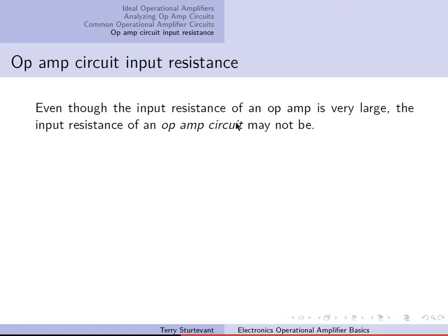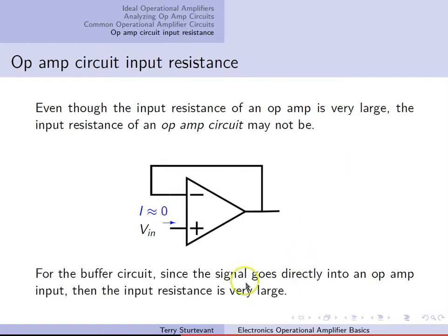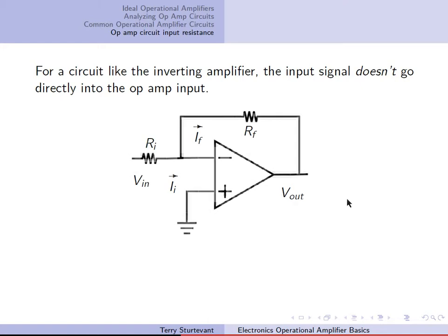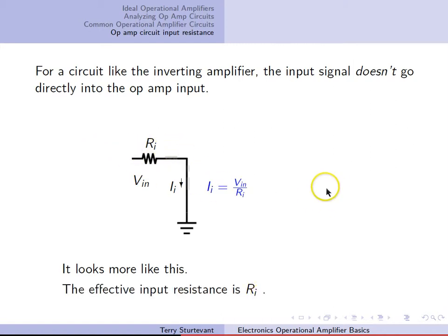Even though the input resistance of an op-amp is very large, the input resistance of an op-amp circuit may not be. For a buffer or voltage follower, no current goes in — since the signal goes directly into an op-amp input, the input resistance is very large. For a circuit like the inverting amplifier, however, the input signal doesn't go directly into the op-amp input; it goes through a resistor into the input. Since the voltage at the two inputs is equal, the circuit effectively looks like the input voltage going through this resistance to ground, so the effective input resistance is just the input resistor RI.